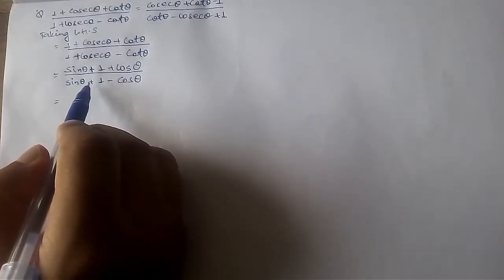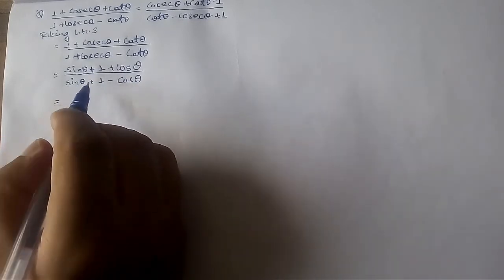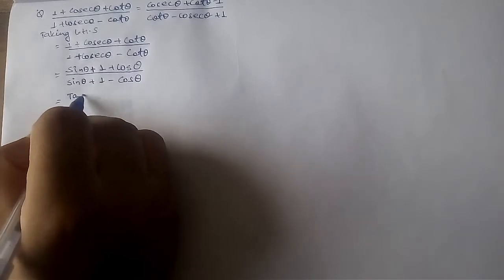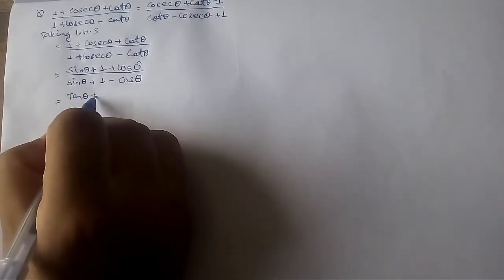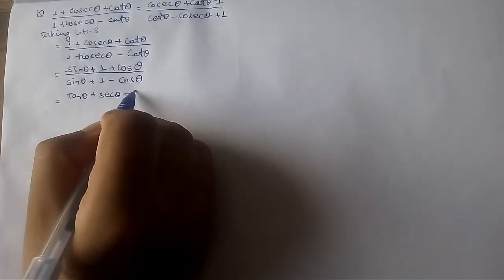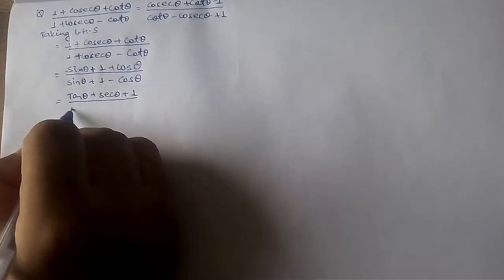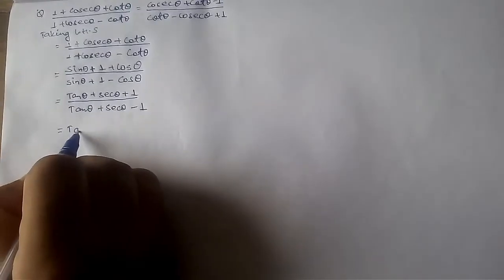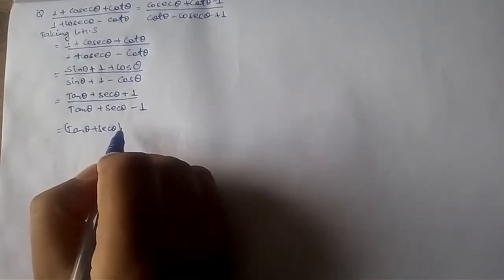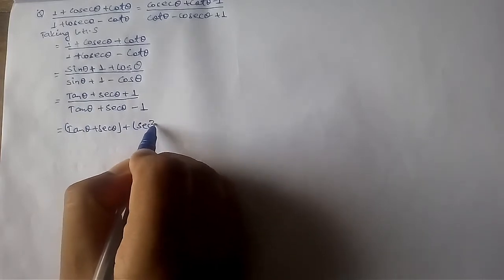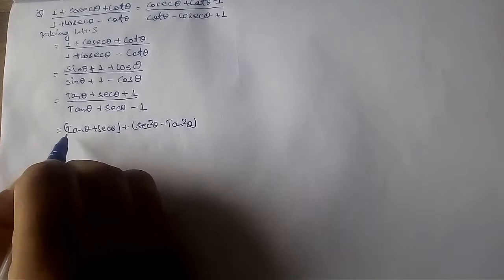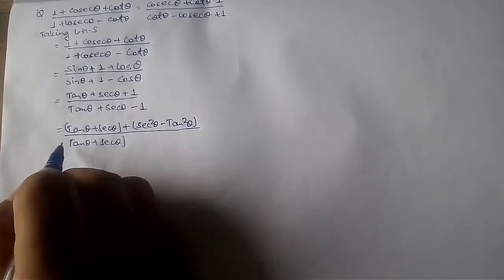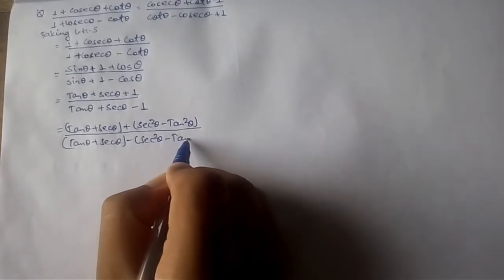Next, we divide both numerator and denominator by cos theta to change the expression into the form of tan and sec. We get: tan theta plus sec theta plus 1 divided by tan theta plus sec theta minus 1. Then we write this in terms of sec squared theta minus tan squared theta, applying the identity: sec squared theta minus tan squared theta equals 1.